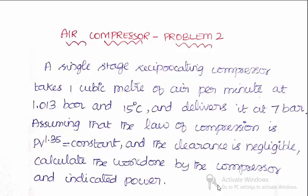A single stage reciprocating compressor takes 1 cubic meter of air per minute at 1.013 bar and 15 degree Celsius and delivers it at 7 bar. Assuming that the law of compression is PV^1.35 = constant and the clearance is negligible, calculate the work done by the compressor and indicated power.